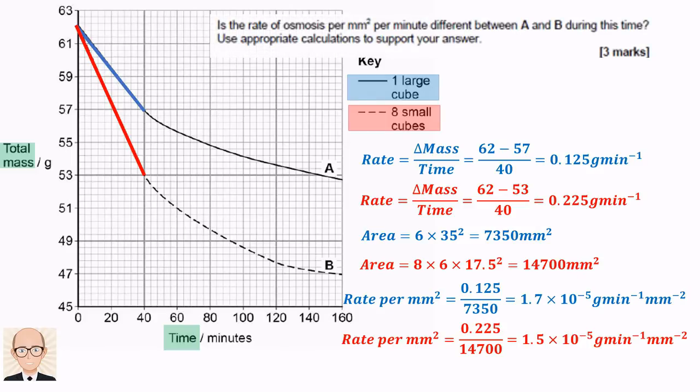The question asks if these two values are different. Now there's not a huge difference between 1.7 x 10 to the minus 5 and 1.5 x 10 to the minus 5, and it's probably within the range of measurement uncertainty anyway. However, the values are different. So you could either say that there is a difference between the two rates per area, or that the two values are so close that they're probably equal.